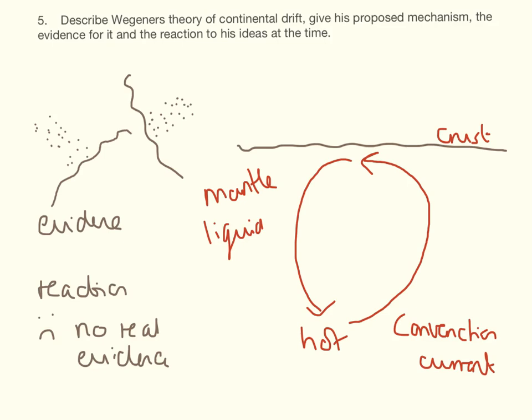So marks for this: I'm going to give you one mark for each piece of evidence, one mark for the reaction, and then marks for convection currents, that it happens in the mantle, and the tectonic plates and the crust are the bits that actually move around.